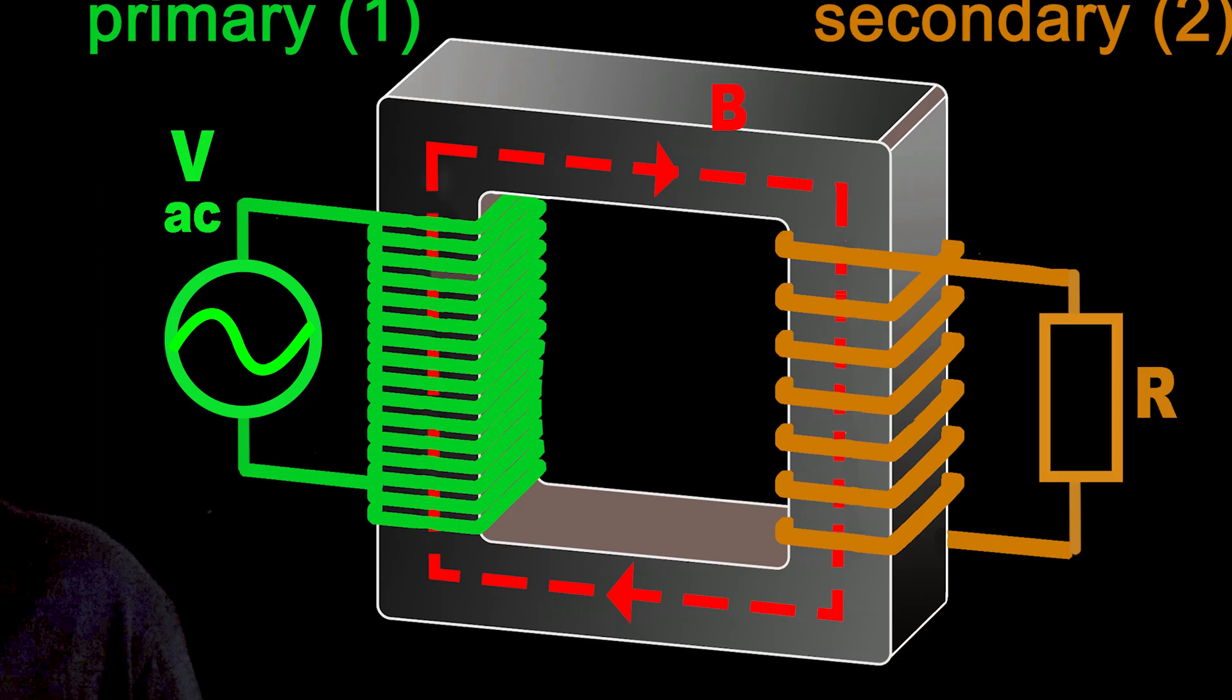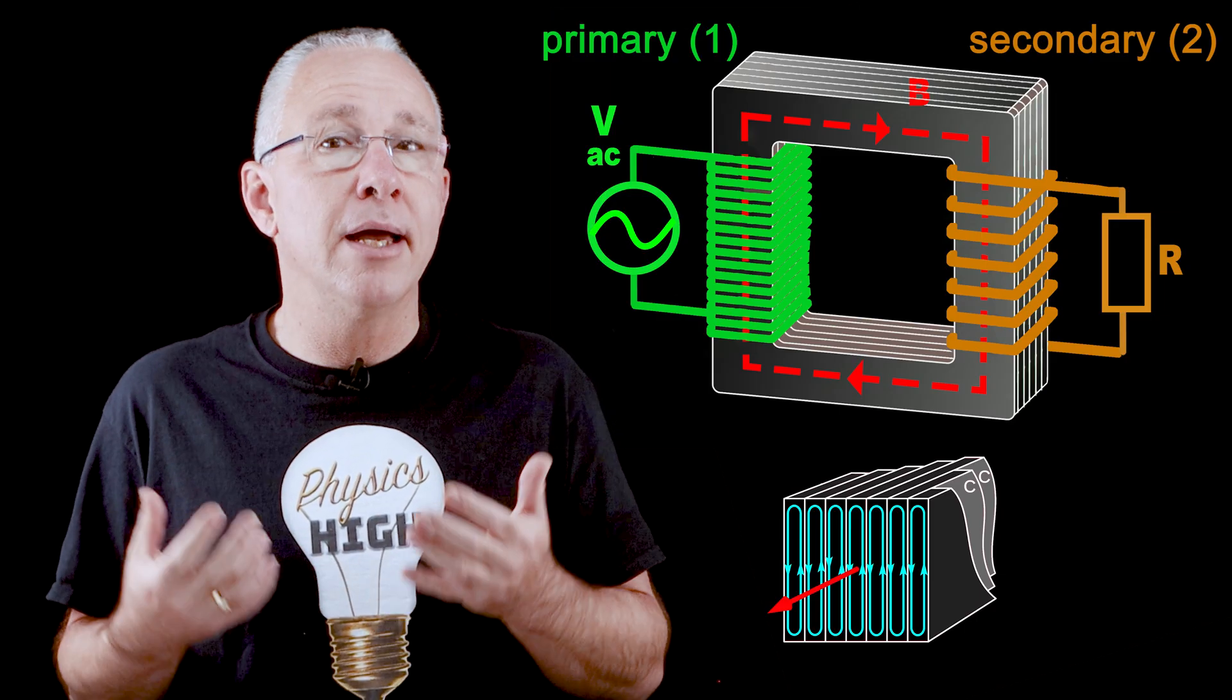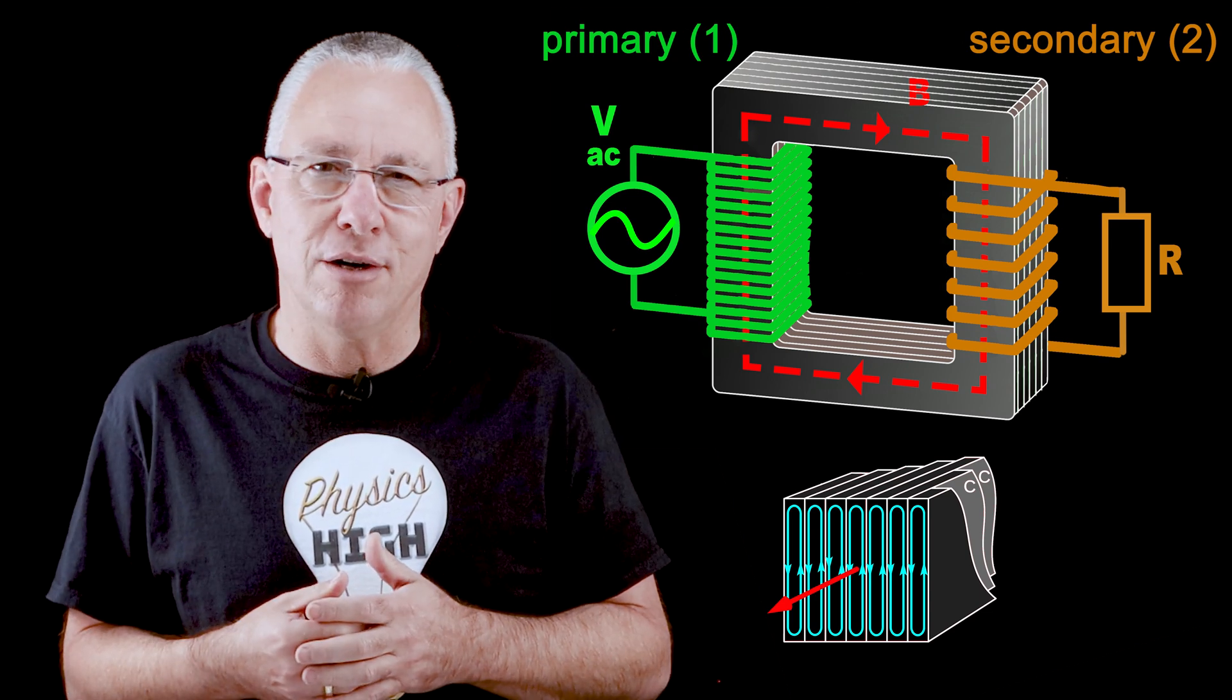So as a result, the iron core is laminated. Now this significantly reduces the size of the eddy currents and thereby reduces the resistive heating and thus increases the efficiency of the transformer.